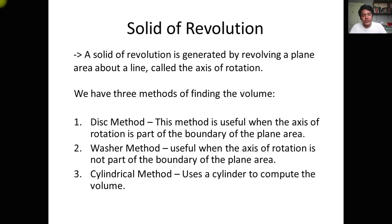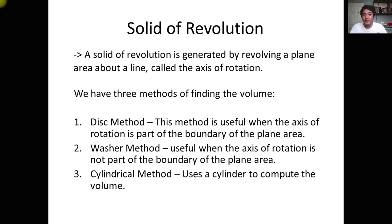What is a solid of revolution? A solid of revolution is actually generated by revolving a plane area about a line called the axis of rotation. In the other application of definite integrals where we calculated the area bounded by the curves, here we're going to plot the curves and find their intersection.